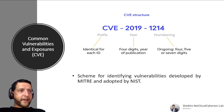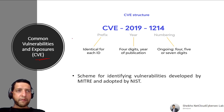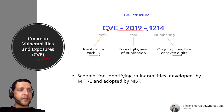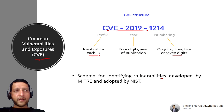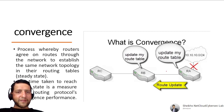CVE (Common Vulnerabilities and Exposures) is a database where vulnerabilities are listed with unique IDs — a four-digit year of publication followed by a four-, five-, or seven-digit number. It is a scheme for identifying vulnerabilities developed by MITRE and adopted by NIST. You can search CVE on Google to find details about specific vulnerabilities.